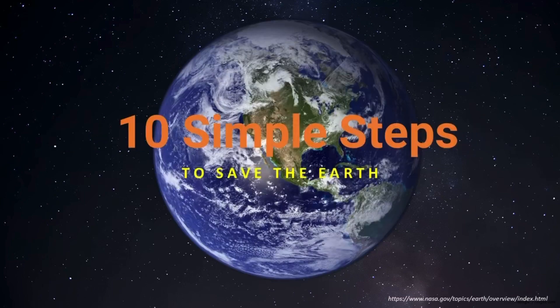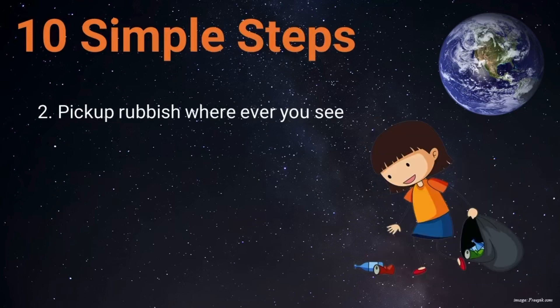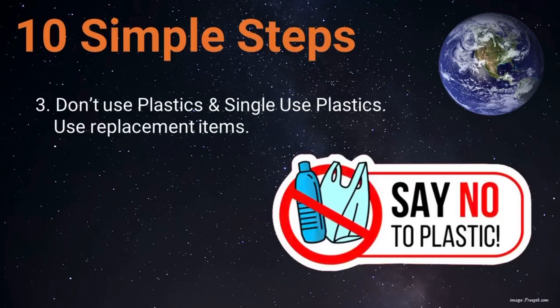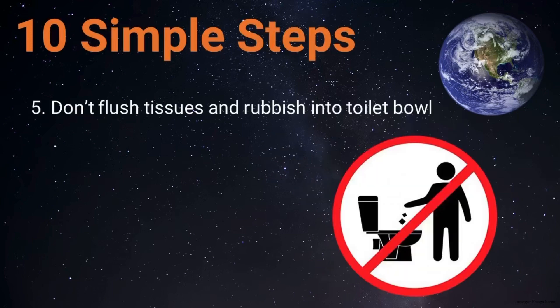We have 10 simple steps you can do as your part to save the Earth. Number one: throw rubbish in the garbage bin only. Number two: pick up rubbish everywhere you see and dispose it in the garbage bin. Number three: don't use plastic and single-use plastics — use replacement items. Number four: use reusable masks and avoid single-use masks. Even if you use a single-use mask, ensure to cut the ear loop before you throw it away. Number five: don't flush tissues and rubbish like pads into the toilet bowl.